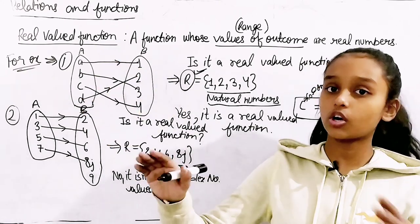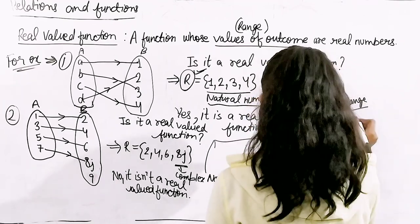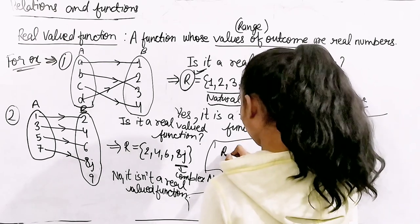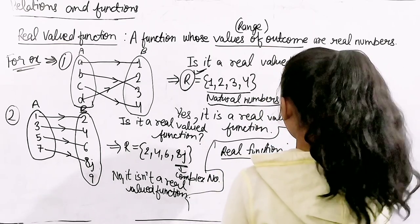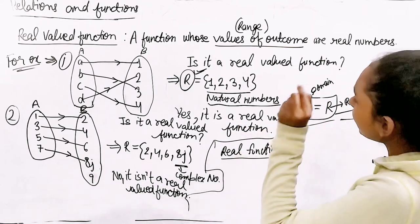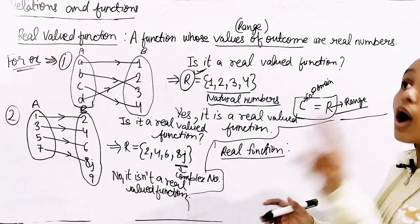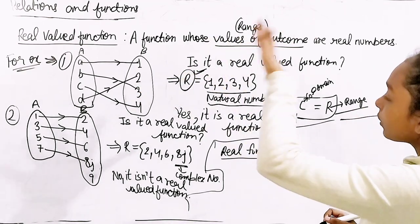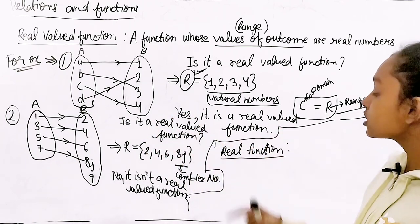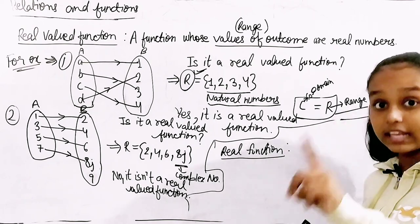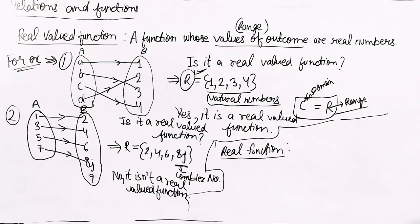That's all we discussed about real valued function — we solved two examples. Now let's move on to our next topic: real function. We've discussed real valued function, and now let's move on to real functions. In real function there is just a little difference from real valued function: in real function we talk about both domain and range, but in real valued function we only talk about the range.